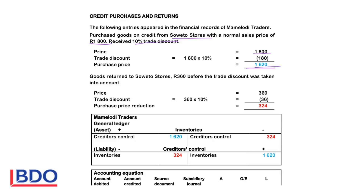If you return goods and they say that you return them before the trade discount was taken into account, it means you also have to deduct the trade discount, because they will not give you back the full price. You didn't pay the full price — they reduced the price by 10%. So if we return any of these goods, we will deduct the trade discount, and that means we return goods that cost us $324.